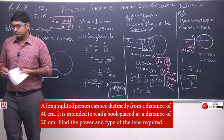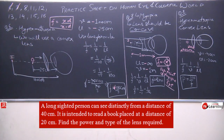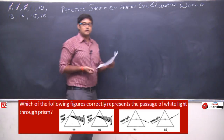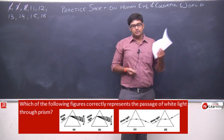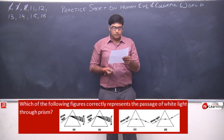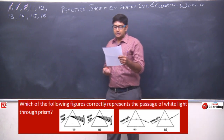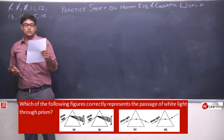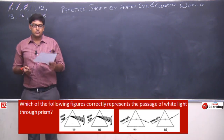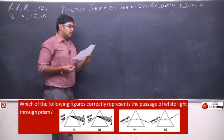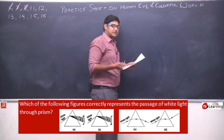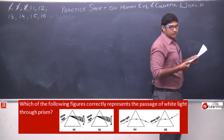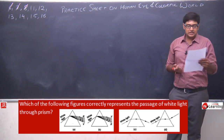So this was question number 8 — you can note this. Now let us discuss question number 11. It is a very easy question. Which of the following figures correctly represents the passage of white light through a prism? Main bahut detail mein nahi bataunga — just a quick answer karte hain iska.